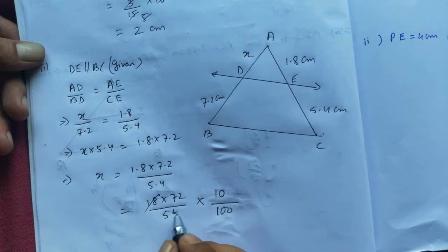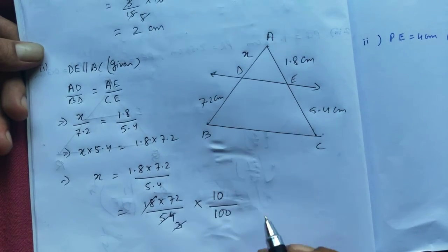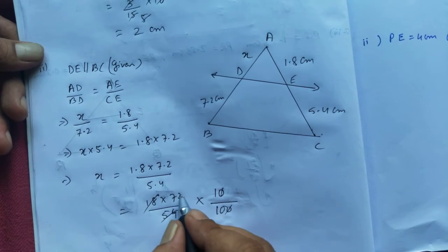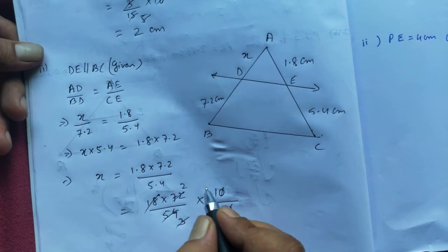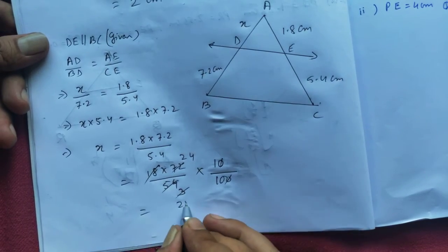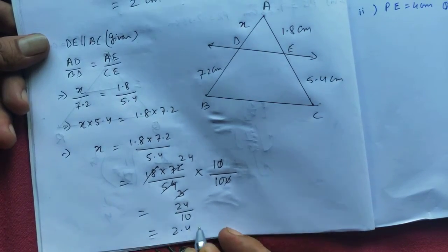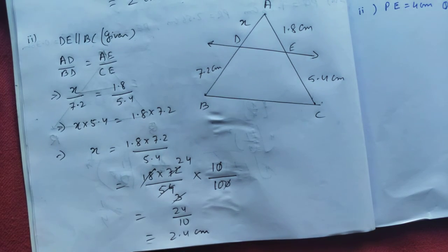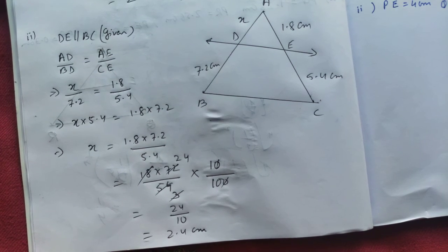Cancel it out: 18 goes 3 times into 54, and 3 goes 2 times into 6, giving 4 — so you get 24/10, which is 2.4 cm. You can pause the video to check the solution. Thank you.